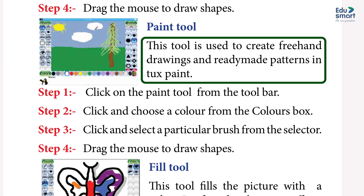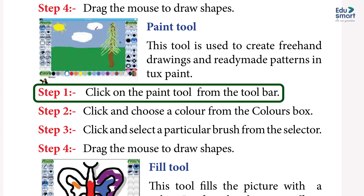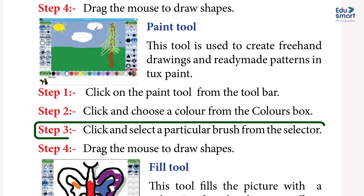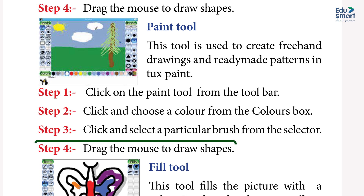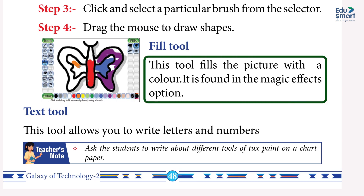Paint tool — this tool is used to create freehand drawings and ready-made patterns in Tux Paint. Step 1: click on the Paint tool from the toolbar. Step 2: click and choose a color from the colors box. Step 3: click and select a particular brush from the selector. Step 4: drag the mouse to draw shapes.